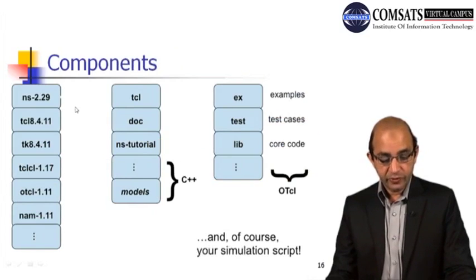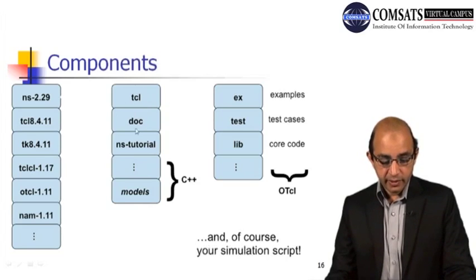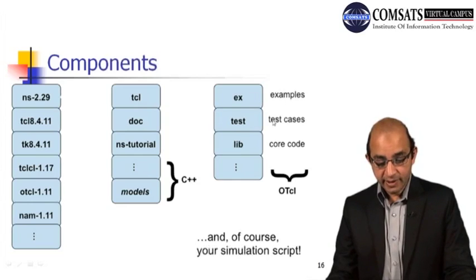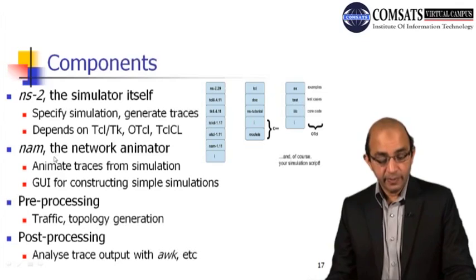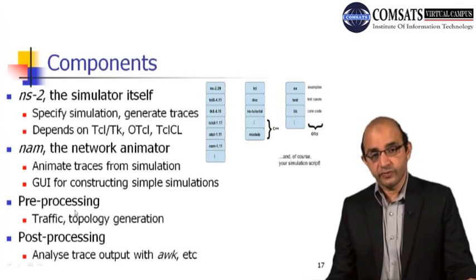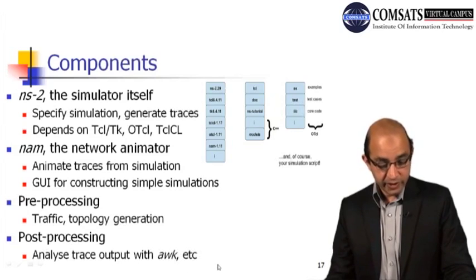The components of NS2 include NS2 itself with its version, TCL, TK, and NAM. Documentation and tutorials are available, and different models are implemented in C++ with examples and test cases. The core code specifies simulations, generates traces, and depends on TCL and TK. NAM animates traces from simulation and provides a GUI for constructing simple simulations. Pre-processing includes traffic and topology generation, and post-processing involves analysis and tracing using Xgraph or NAM.